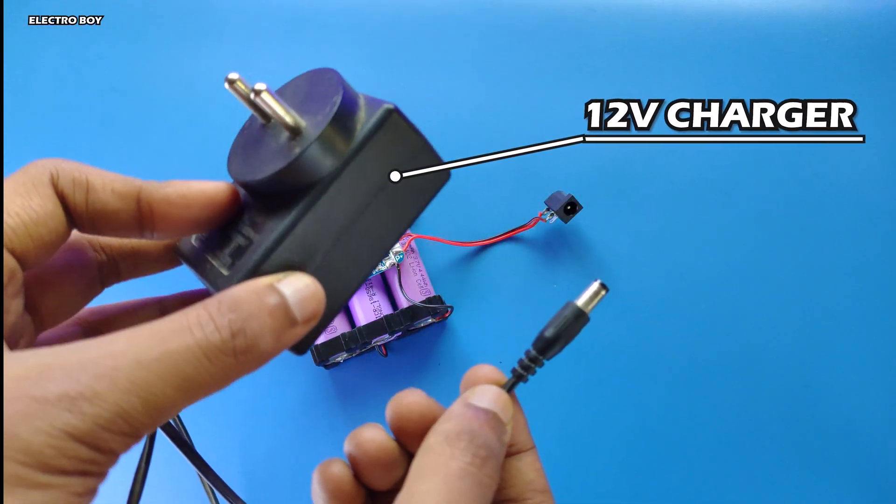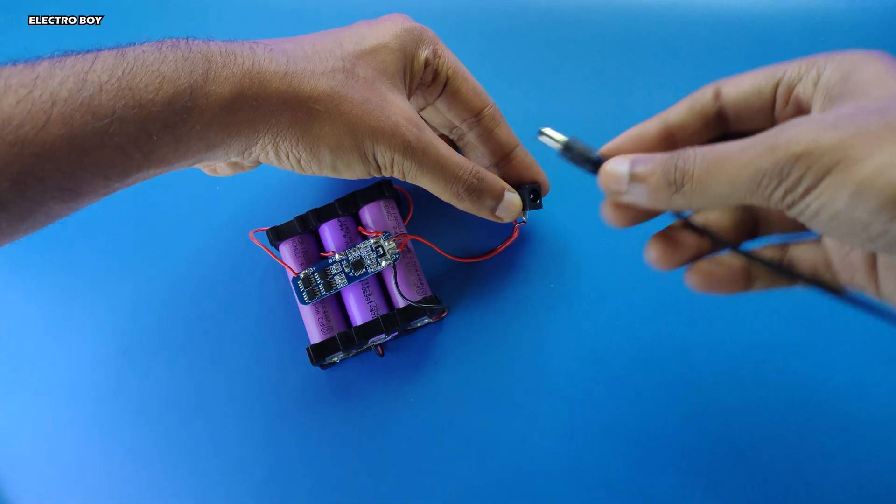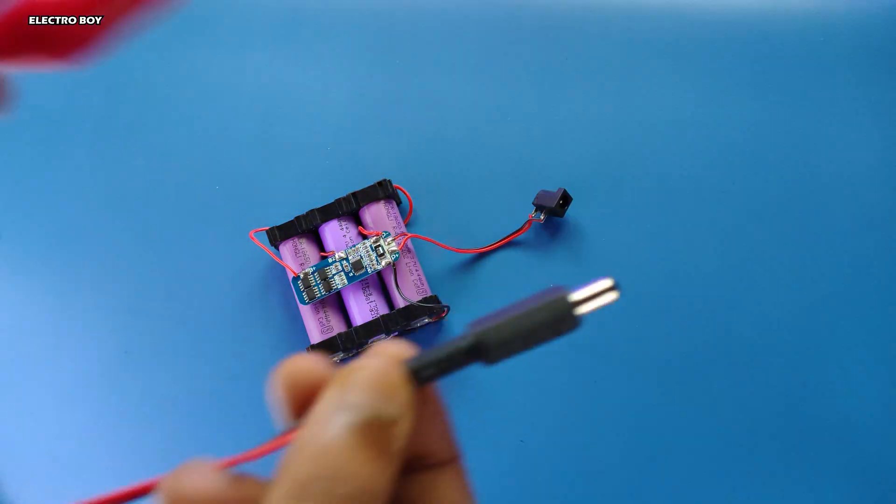At first, if the BMS doesn't show any output voltage, just connect it to a 12V charger to activate.